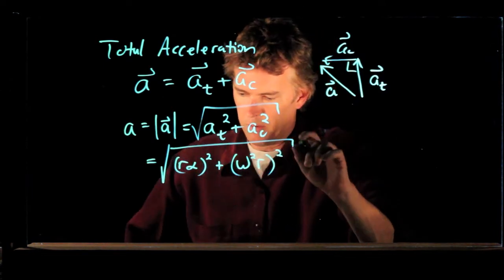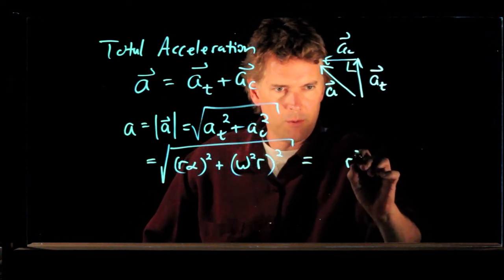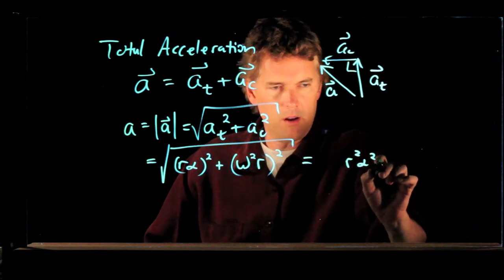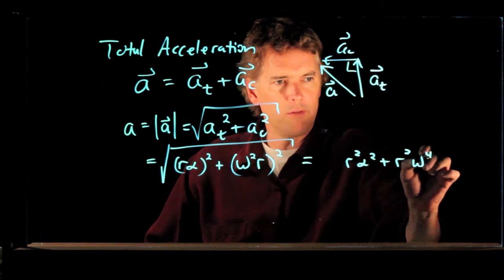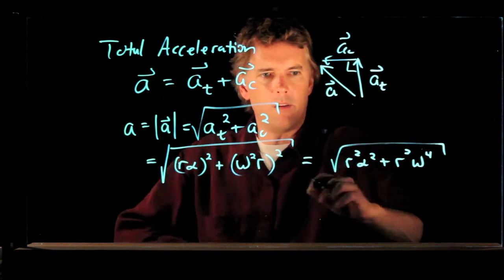And so we can lump those things together. And now we can simplify a bit. We have an r squared alpha squared plus r squared omega to the fourth. All of that square rooted.